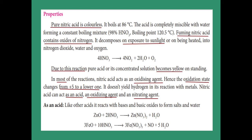Most reactions of nitric acid involve it acting as an oxidizing agent — it oxidizes other compounds and the nitrogen in nitric acid is reduced from +5 to a lower oxidation state. Nitric acid does not yield hydrogen with metals. Sometimes it acts as an acid: for example, zinc oxide reacts with nitric acid — Zn²⁺ reacts with NO₃⁻ to give zinc nitrate, and O²⁻ reacts with H⁺ to give water. Iron oxide with 10 moles of nitric acid gives ferric nitrate, nitric oxide, and 5 moles of water.